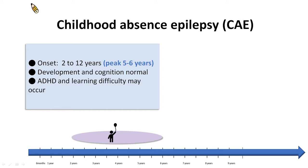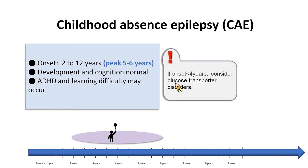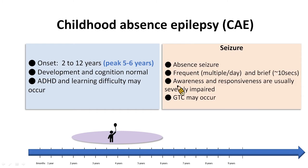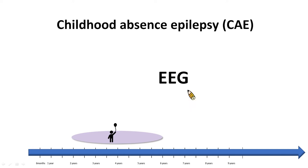Attention deficit hyperactivity disorder and learning difficulty may occur. A point of attention: if the disease onset is below 4 years of age, glucose transporter disorders should be considered. Absence seizures are typically frequent, could be daily or even multiple times in a day, and brief with an average of 10 seconds. Awareness and responsiveness are usually severely impaired. There may also be generalized tonic-clonic seizures that are usually seen in adolescence.